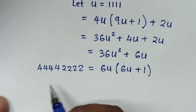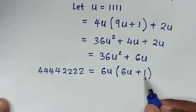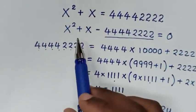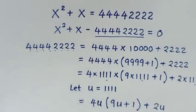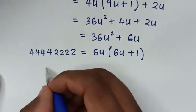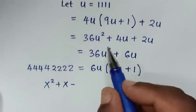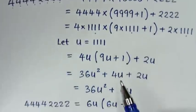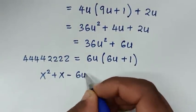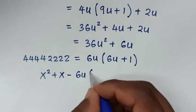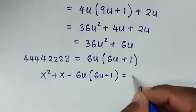Now we substitute this simplified form back into the quadratic equation. So it becomes x squared plus x minus 6u(6u + 1) is equal to 0.